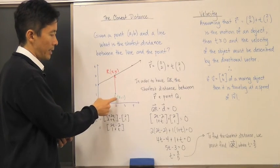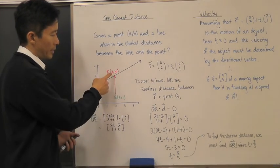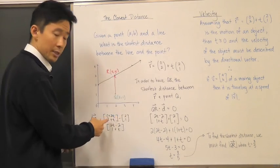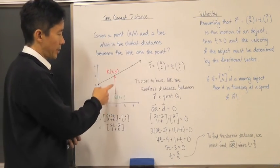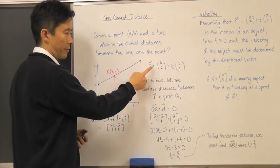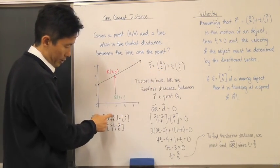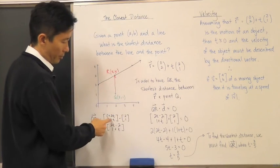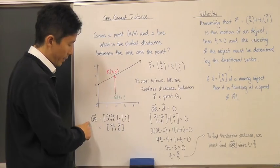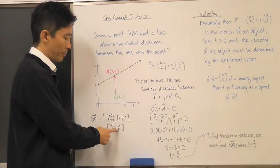To find vector QR, we take point R minus Q. Any point R on the line is described by the vector equation: (0 + 2t, 2 + t). Subtracting the point Q which is (2, 1), we get QR = (2t − 2, 1 + t).